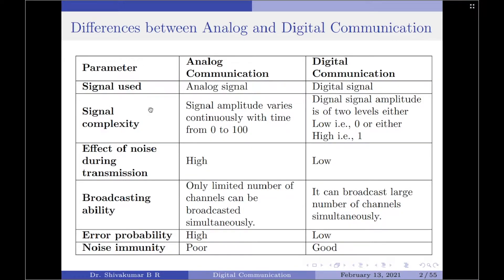Analog signals are highly complex because the signal amplitude varies continuously with time from 0 to 100. On the other hand, digital signal amplitude is of two levels — that is, either low, which is 0, or either high, which is 1.